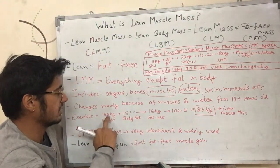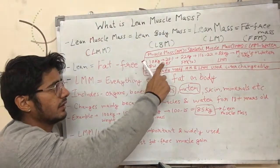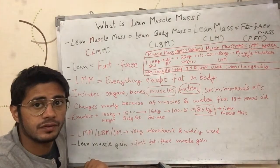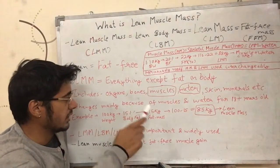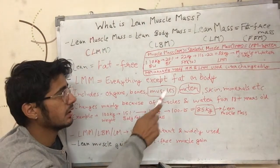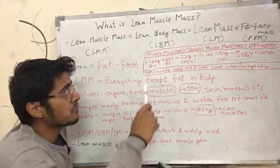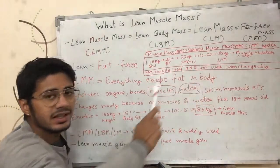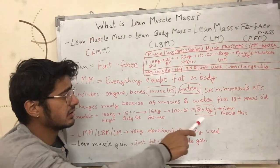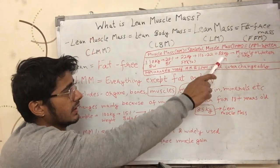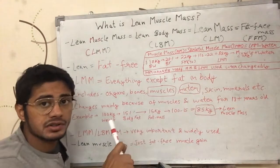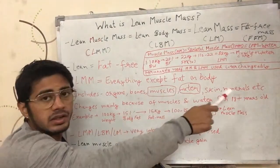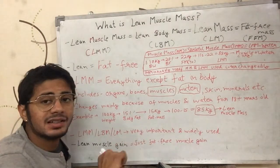Let's say the 100 kg guy has gained some weight and is now 110 kg, with a body fat percentage of 20 percent. That means he has 22 kilograms of fat mass. Earlier he had 15 kilograms of fat mass, so he has gained 7 kilograms of fat mass. Subtracting the fat mass from total body weight gives 88 kg of lean muscle mass, compared to 85 kg before — meaning he gained 3 kilograms of muscle and water.